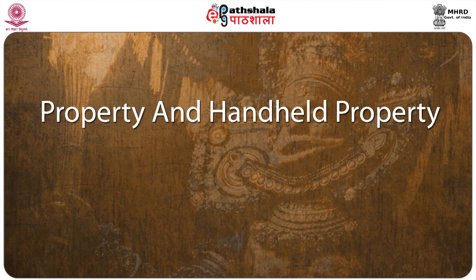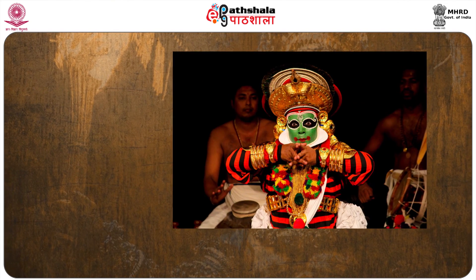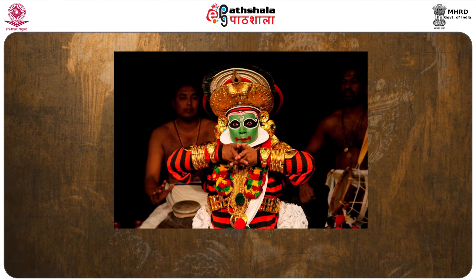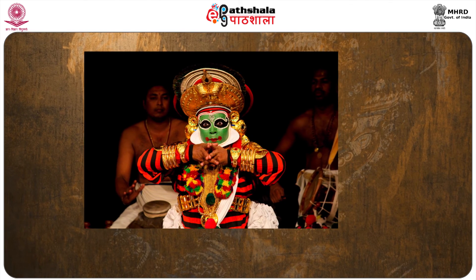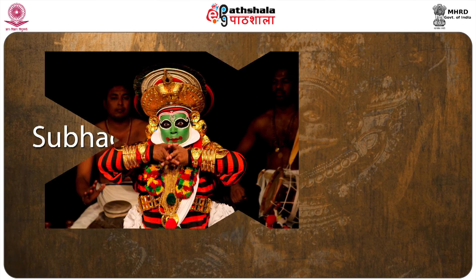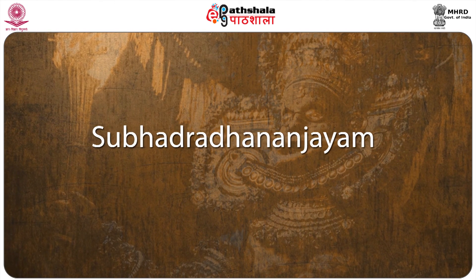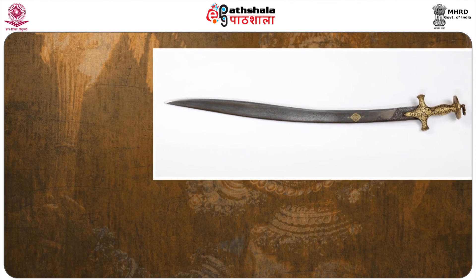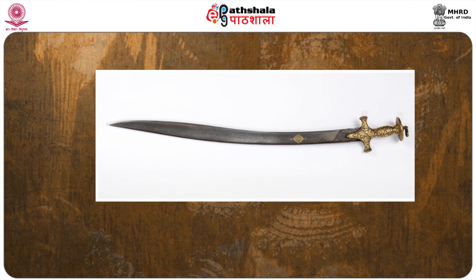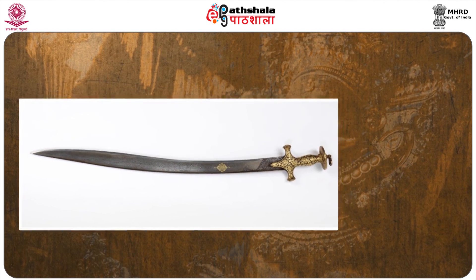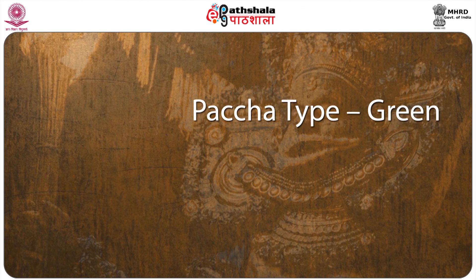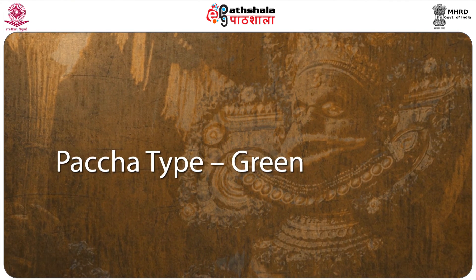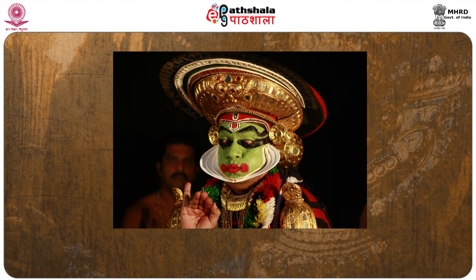Properties and handheld properties: In Kudiyattam, many handheld objects as properties are not used in a realistic manner but in a stylized manner, although many such properties are also used realistically. In Subhadra Dhananjayanam, Arjun enters with a bow and arrow; Lakshmana enters with a sword in Shurpanakhanam, etc. Makeup: Ravana. According to the characters, facial makeup is classified as Paccha type — green Paccha is used for characters who have royal but gentle, noble characteristics such as Sri Rama, Lakshmana, Vibhishan, Arjun, etc.